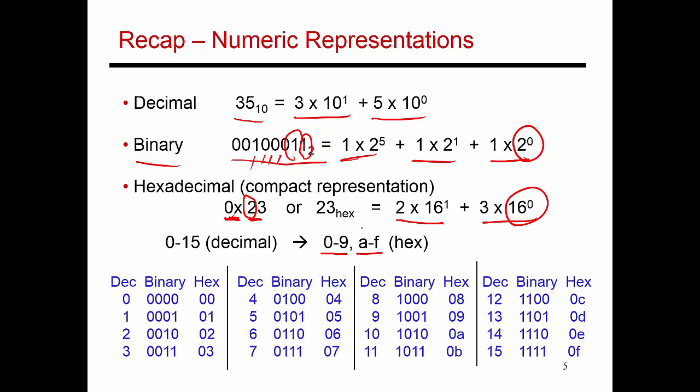So A refers to the number 10, B refers to the number 11, C to the number 12, and so on, until F finally refers to the number 15. Down here I'm showing you this table of numbers 0 through 15 in decimal, binary, and hexadecimal formats.